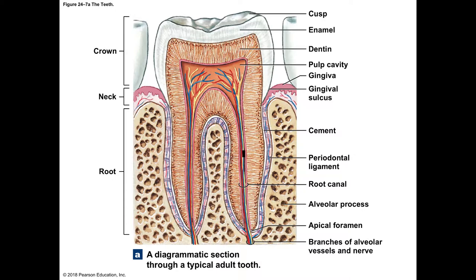The crown is covered by a very hard white substance called enamel. Right underneath the enamel is another bone-like but more porous substance called dentin. Inside the dentin is a cavity called the pulp cavity, which is filled with the endings of nerves and the arteries, veins, and capillaries.